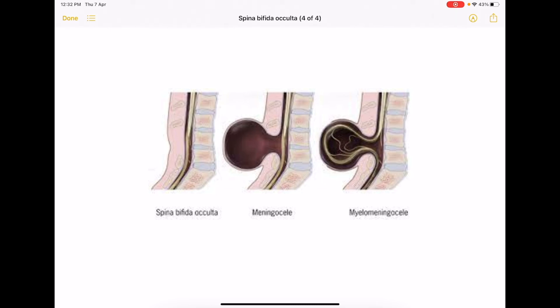Then you have the meningocele and the myelomeningocele. As the name itself says, meningocele only means that the meninges have protruded out and it is a clear cyst and when you aspirate you get clear CSF.